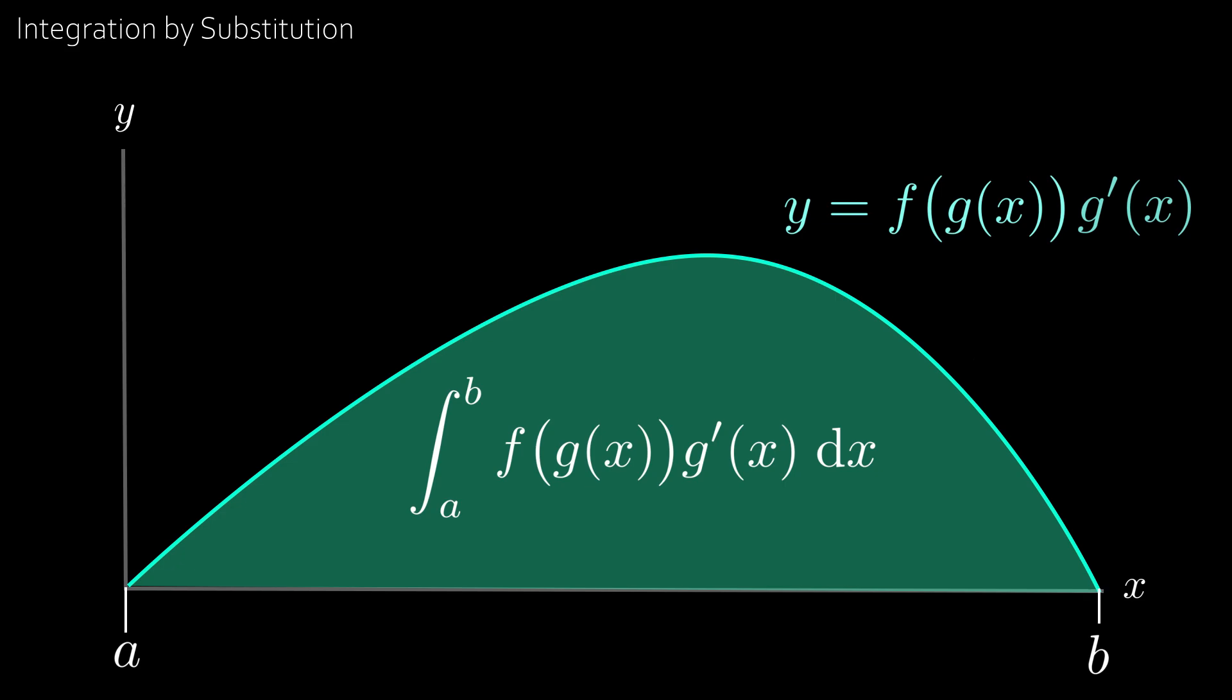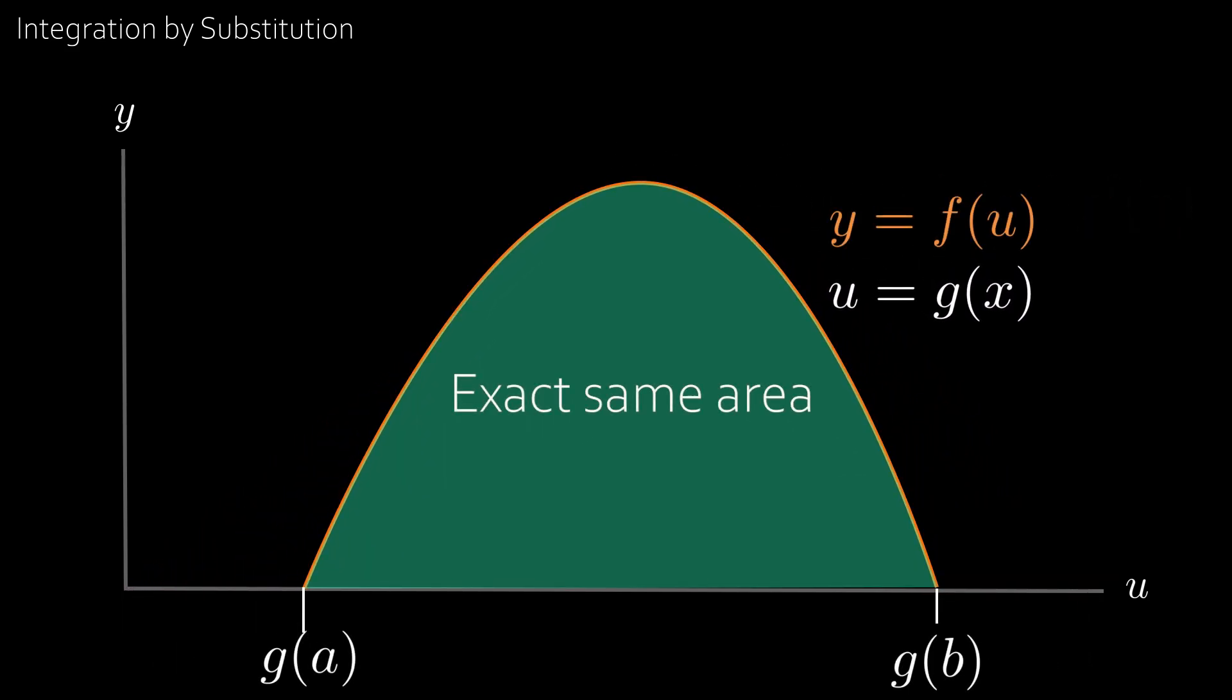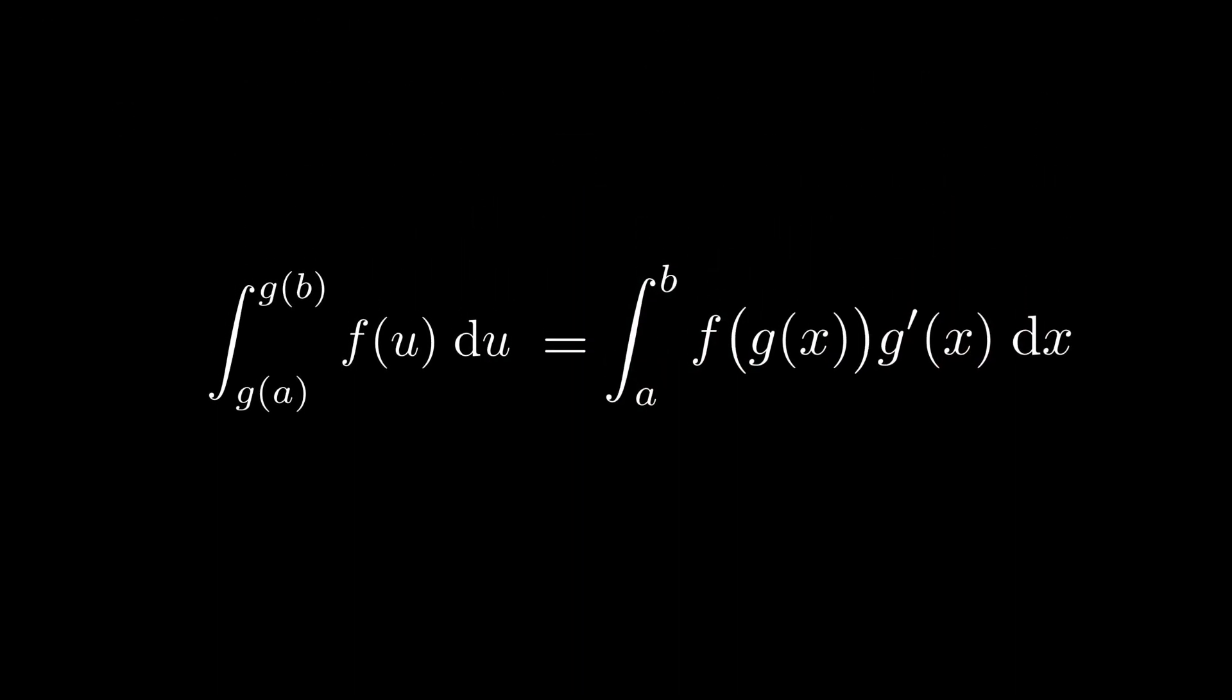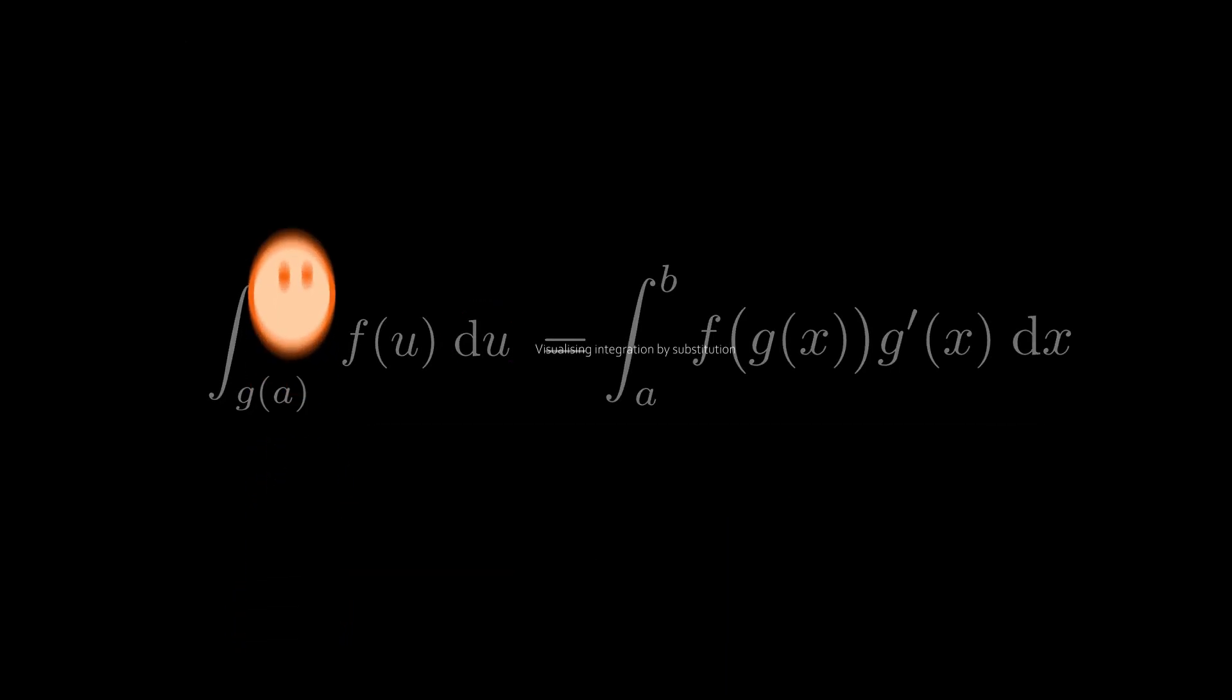But if we make the substitution u equal to g of x, then we end up with a simpler graph with the exact same area. That means the integral of this graph is equal to the integral of the other. But what does all of this mean? How do we integrate with respect to u? How can we visualize integration by substitution?